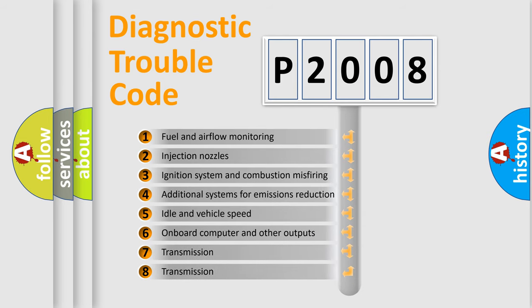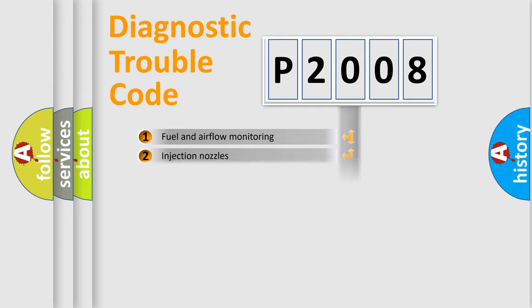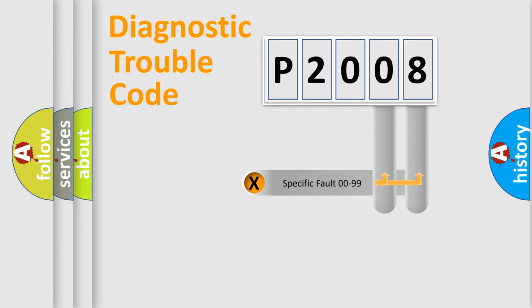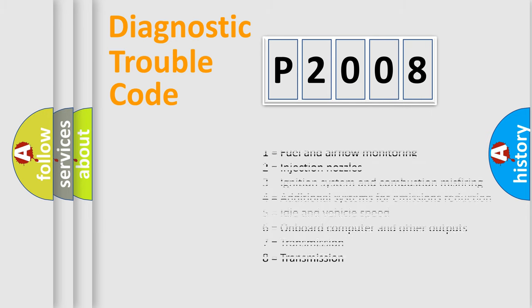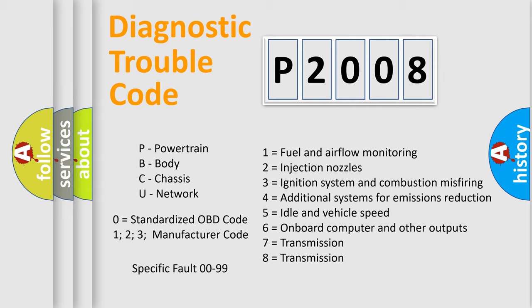The third character specifies a subset of errors. The distribution shown is valid only for the standardized DTC code. Only the last two characters define the specific fault of the group. Let's not forget that such a division is valid only if the second character code is expressed by the number zero.